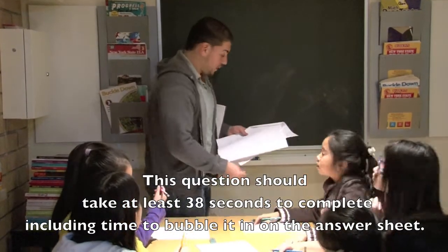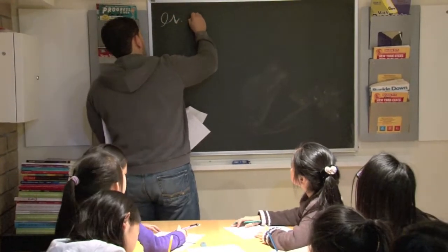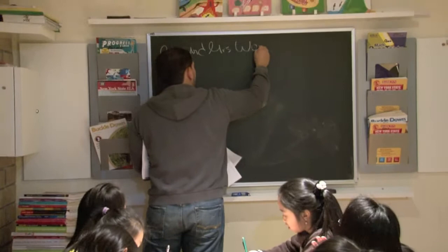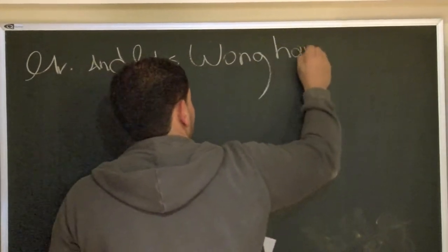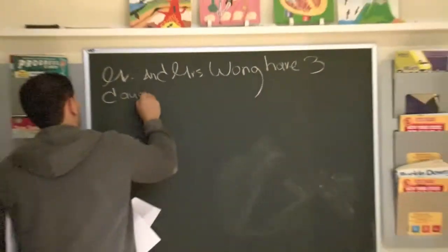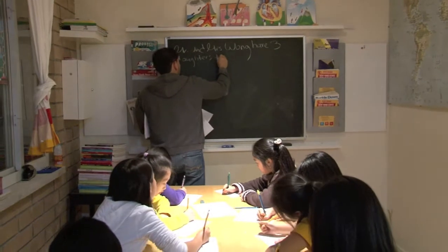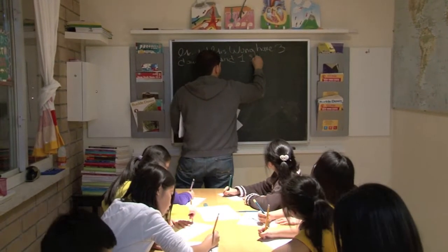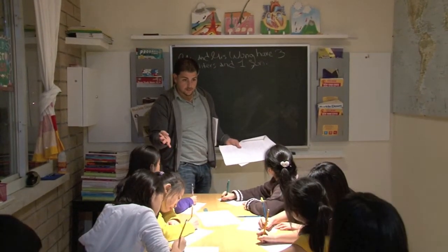I want you to write this down as I'm writing it down. It starts out like this: Mr. and Mrs. Wong — follow along — I have three daughters, okay, three daughters, and I think they have one son. So you with me so far? Three daughters, one son — how many children? Four.